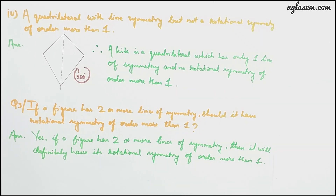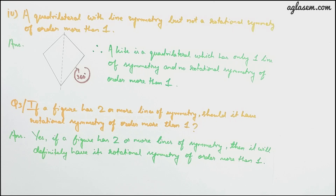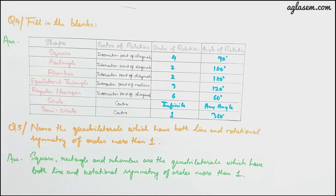Question 3: if a figure has two or more lines of symmetry, should it have rotational symmetry of order more than one? Yes — if a figure has two or more lines of symmetry, then it will definitely have rotational symmetry of order more than one. Question 4 is a fill-in-the-blank type question where the name of a shape is given and you need to provide the center of rotation, order of rotation, and angle of rotation.